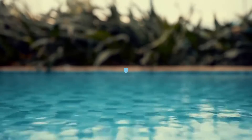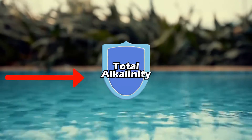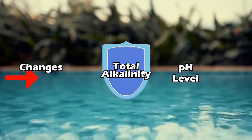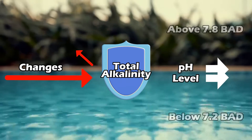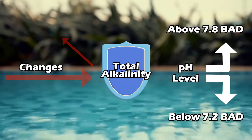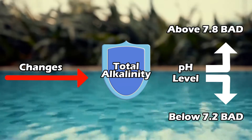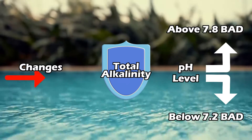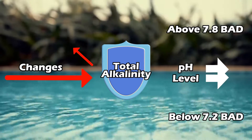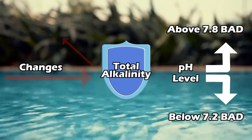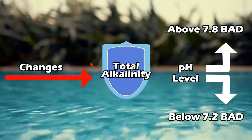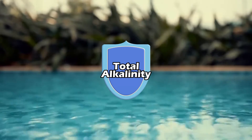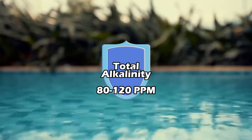Getting back to total alkalinity — we know that total alkalinity, when adjusted properly, prevents your pH from fluctuating. And now we also know that pH high equals bad and pH low equals bad. So to maintain our pH as close to between 7.2 and 7.8 as possible, we need the total alkalinity to be within a certain range — generally speaking, between 80 to 120 parts per million.